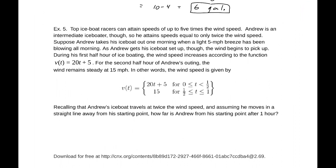Next, top ice boat racers can attain speeds of up to 5 times their wind speed. Andrew is an intermediate ice boater though, so he attains speeds equal to only twice the wind speed. Suppose Andrew takes his ice boat out one morning when a light 5 mile per hour breeze has been blowing all morning. As Andrew gets his ice boat set up though, the wind begins to pick up. During his first half hour of ice boating, the wind speed increases according to the function v(t) equals 20t plus 5.